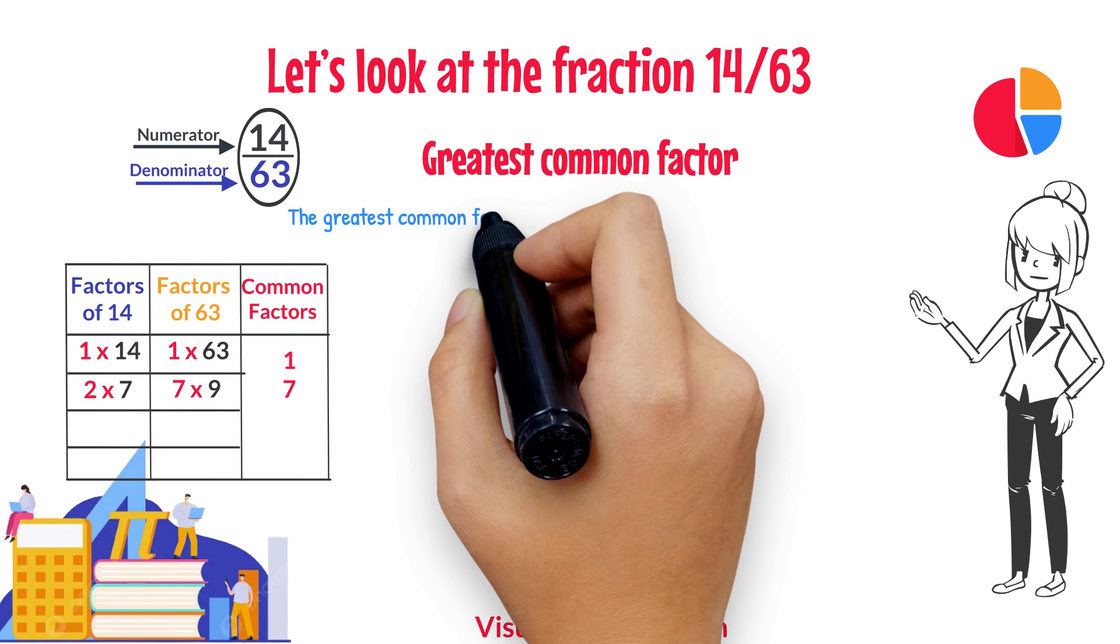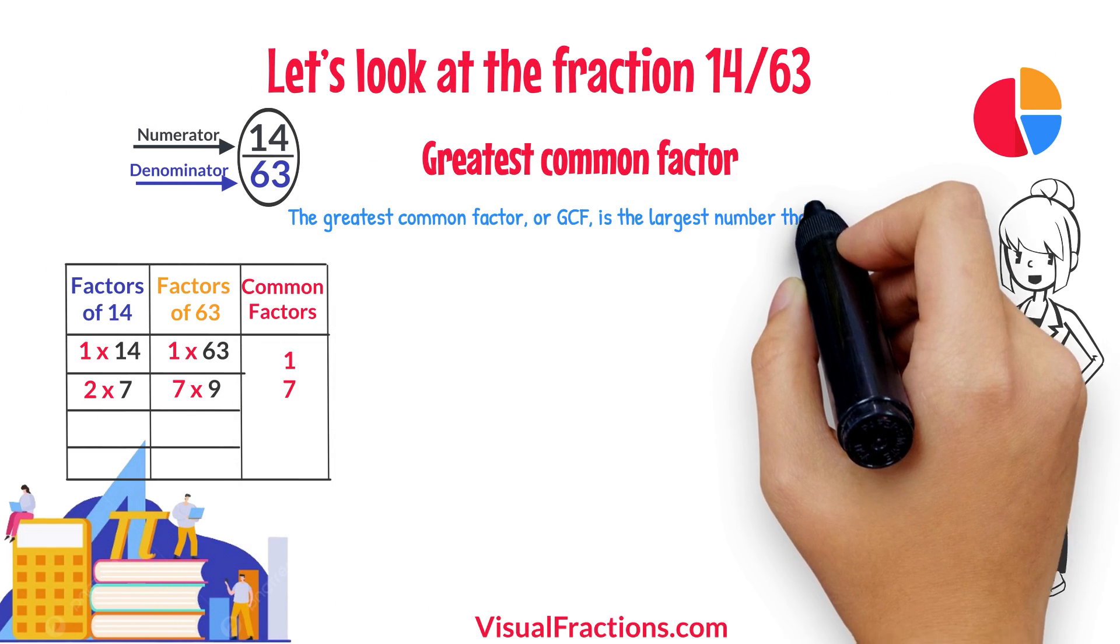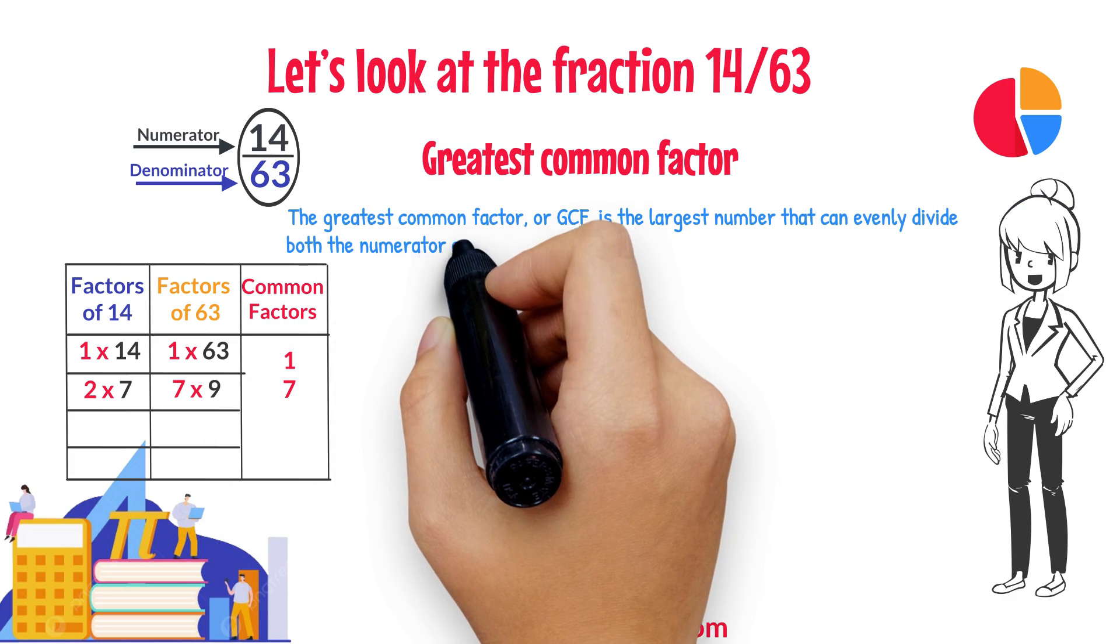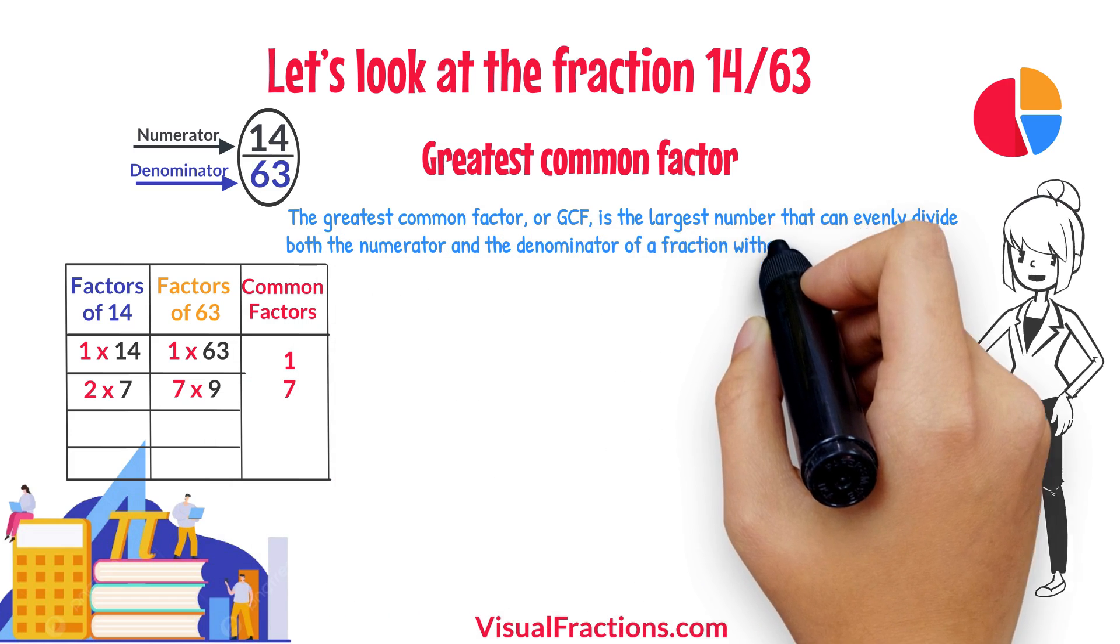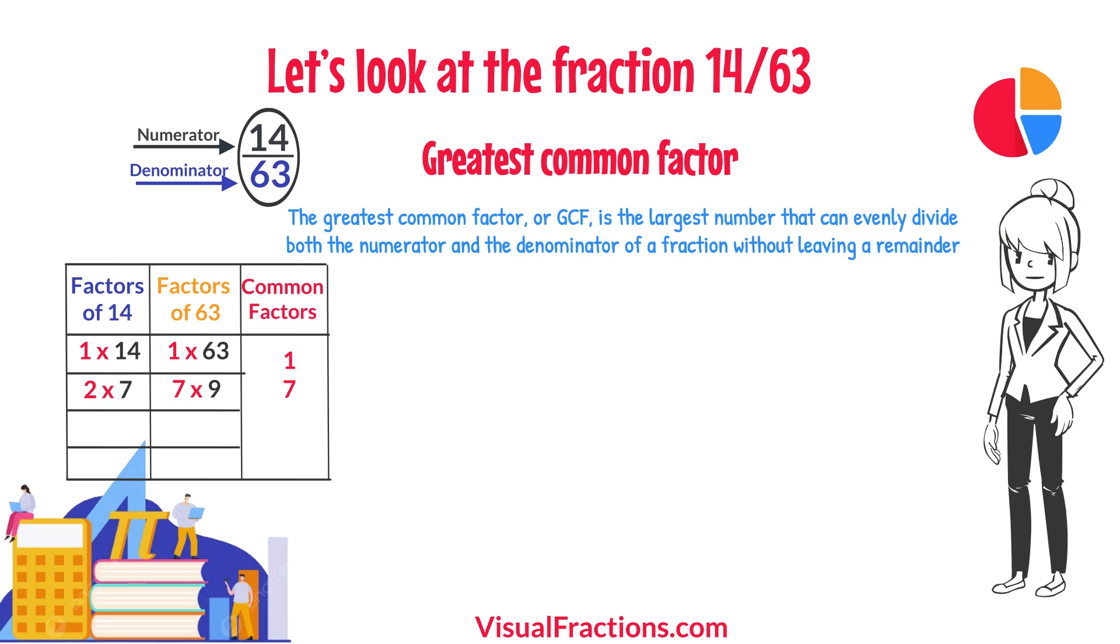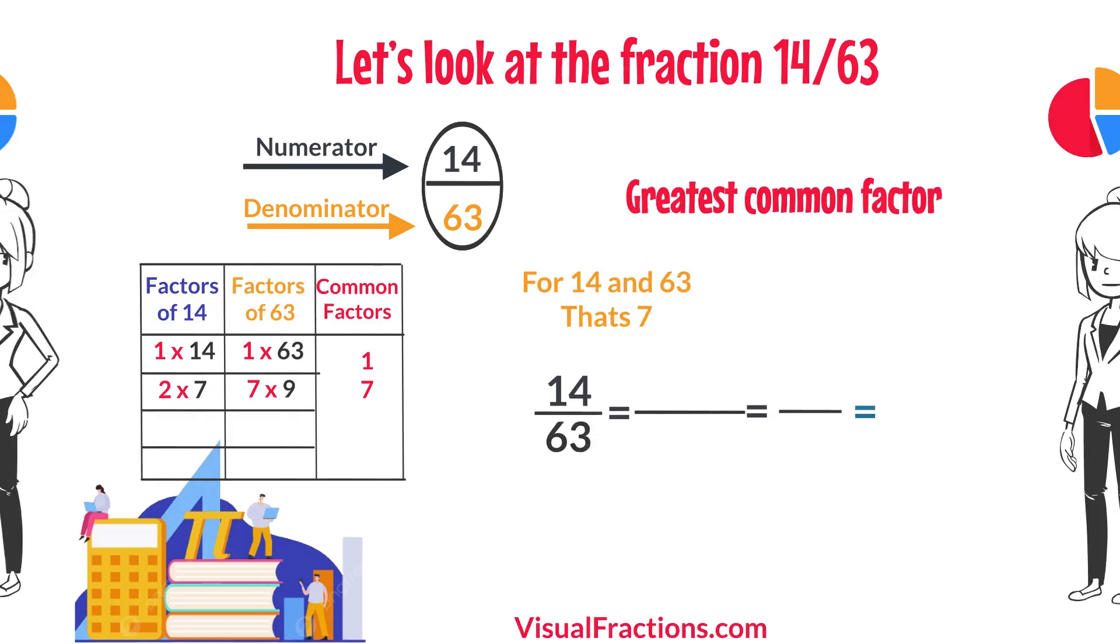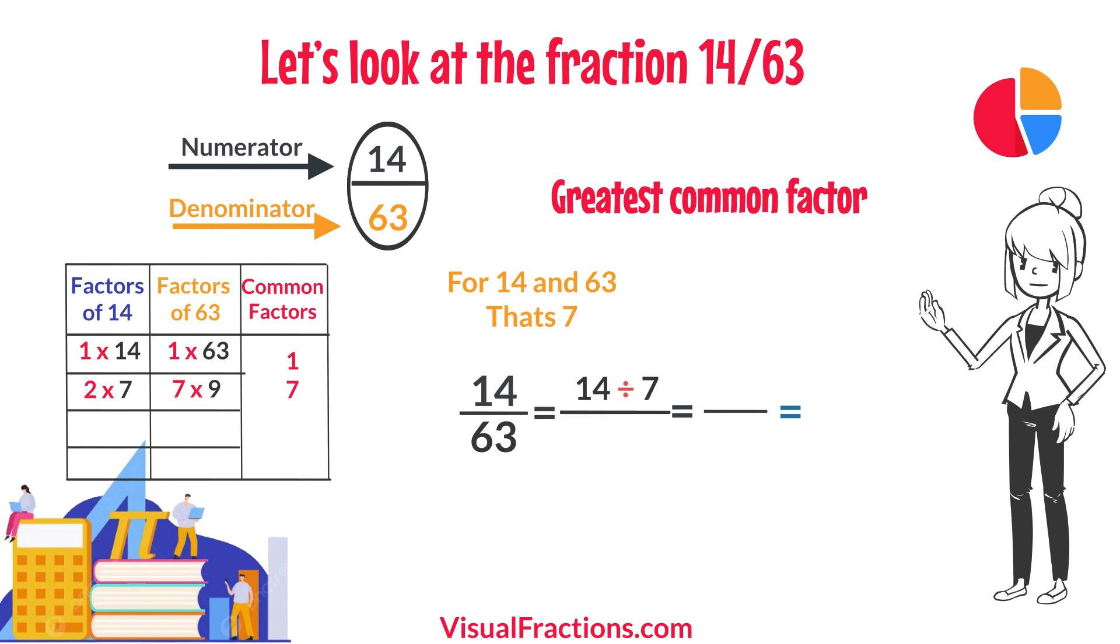The greatest common factor, or GCF, is the largest number that can evenly divide both the numerator and the denominator of a fraction without leaving a remainder. For 14 and 63, that's 7.